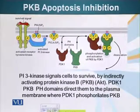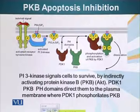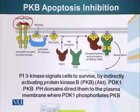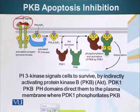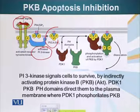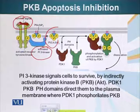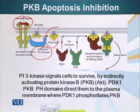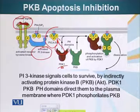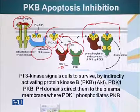RTK receptor tyrosine kinases also play a role in cell survival and apoptosis. Apoptosis is programmed cell death — basically, cells that are not needed are told to commit suicide for the greater good of the organism or the host in which these cells are living. So let's see how receptor tyrosine kinases can manage that.